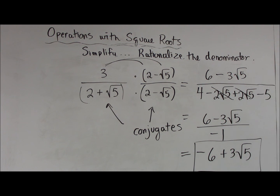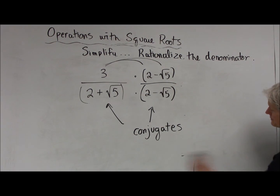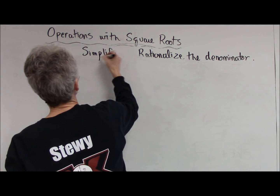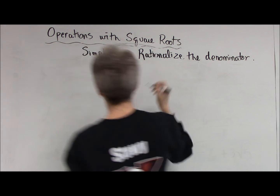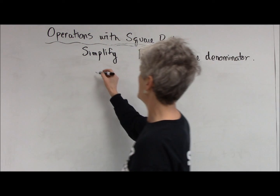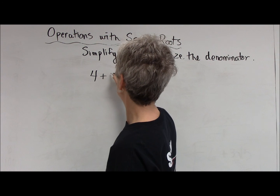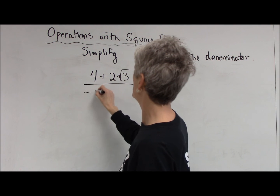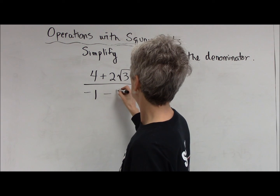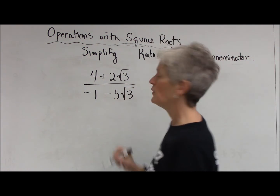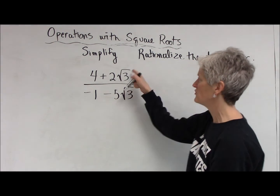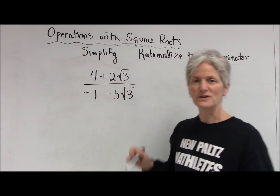Let's do another example of rationalizing the denominator using conjugates — a term you should really know. Let's say I had the fraction: 4 plus 2 times the square root of 3, all over negative 1 minus 5 times the square root of 3. Please resist the temptation to just divide out those square root of 3s — you can't cancel because this whole thing is grouped together.